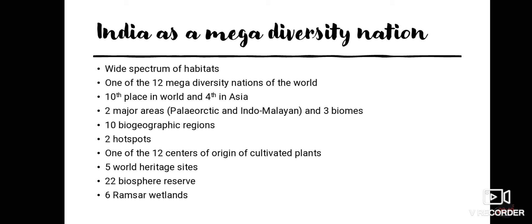India holds 10th place in the world and 4th place in Asia in terms of megadiversity. It has 2 major areas under Nearctic and Indo-Malayan realms, 3 biomes, 10 biogeographic regions, 2 hotspots, 5 World Heritage sites, 22 biosphere reserves, and 6 Ramsar wetlands. These all add to India's status as a major biodiversity nation.